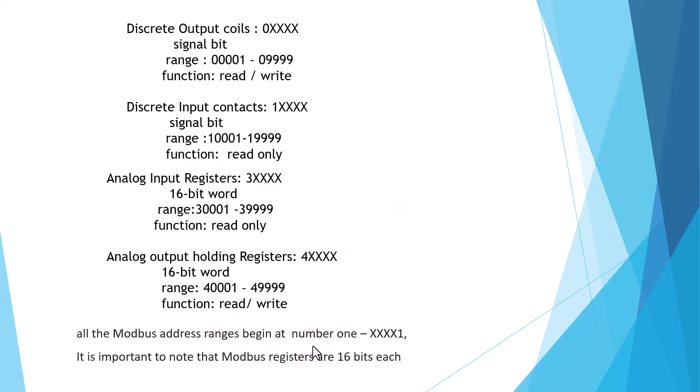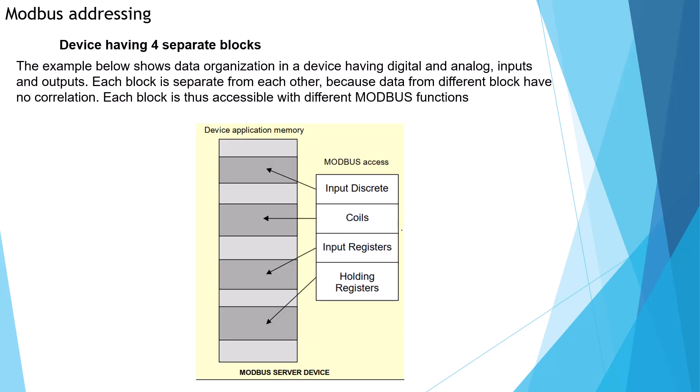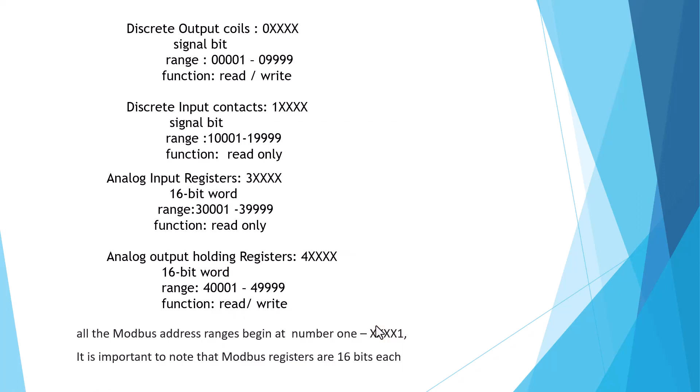Regarding Modbus memory — most of the time we know PLC uses two kinds of memory: dynamic memory and fixed memory. In Modbus, we use fixed memory. So the first block is discrete output, the second is discrete input, then input register, and holding register. They use different memory areas.